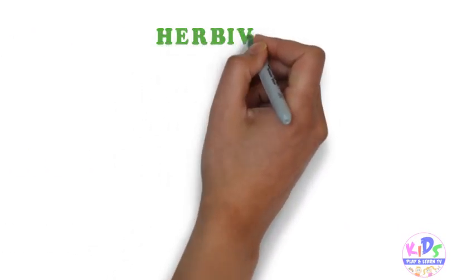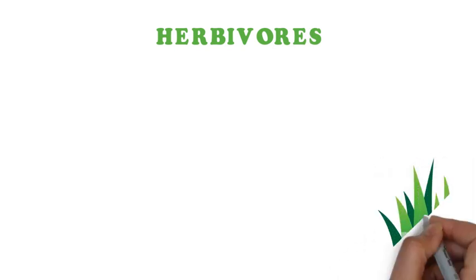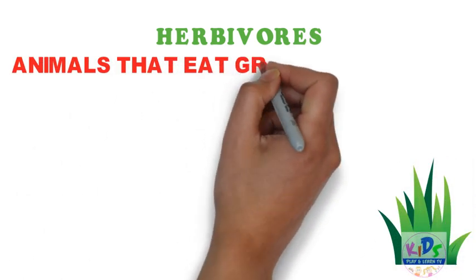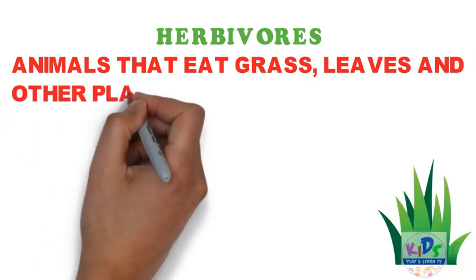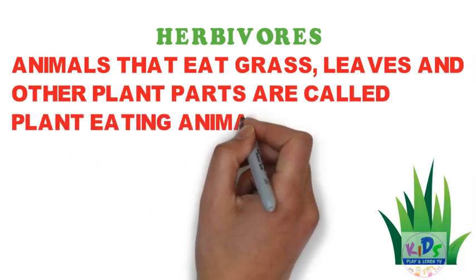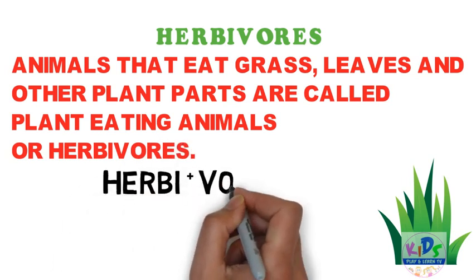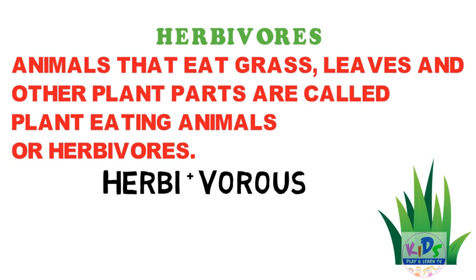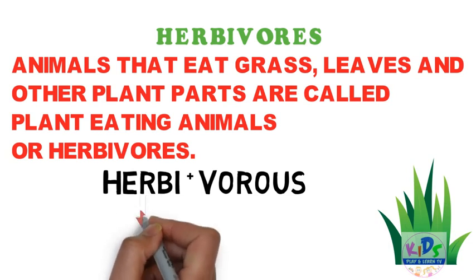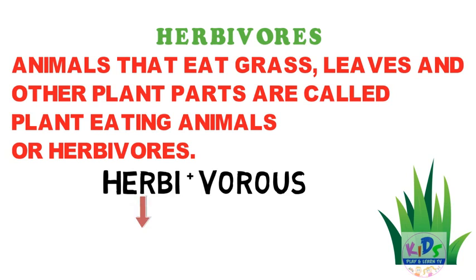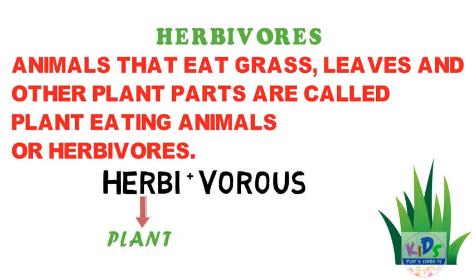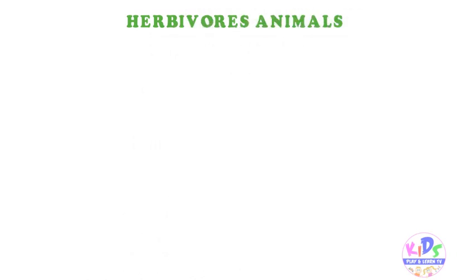Let's learn who are herbivores. Animals that eat grass, leaves, and other plant parts are called plant-eating animals or herbivores. The term herbivore is made up of herbi plus vorus, where herbi means plant and vorus means eating.